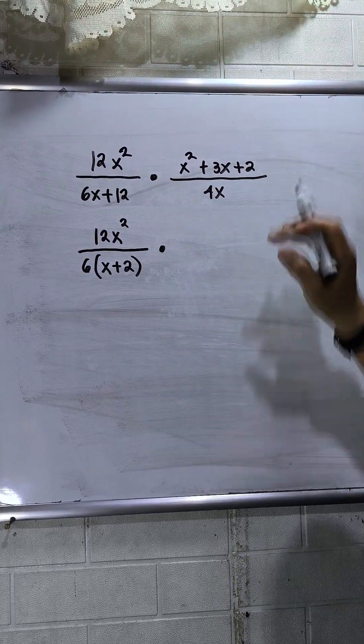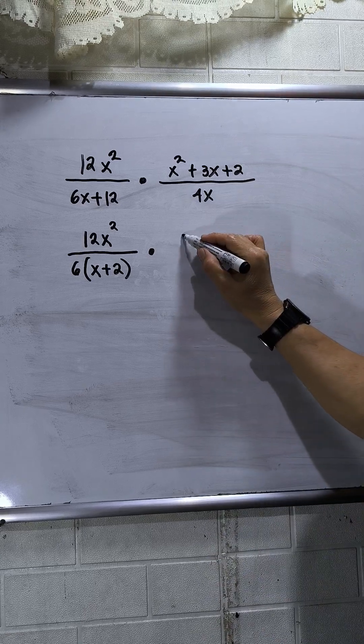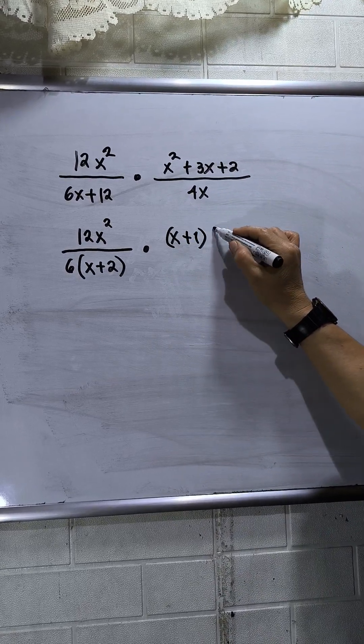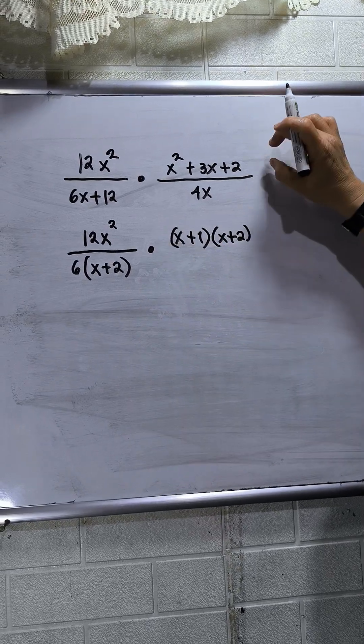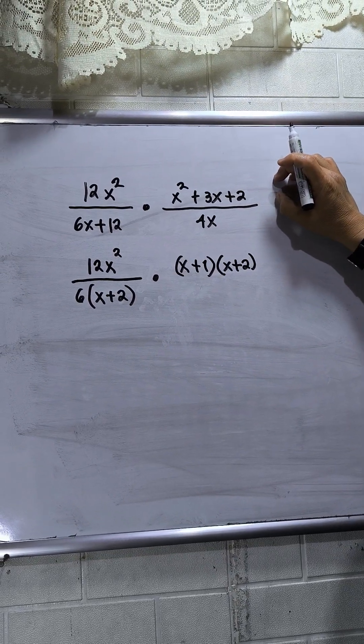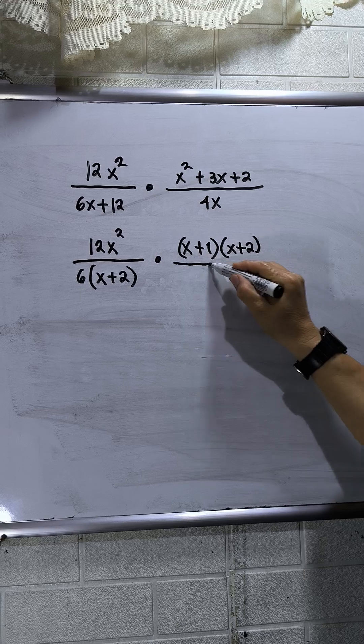Then factor the numerator of the second group, so this will be x plus 1 times x plus 2. If we multiply this one, we will come up with x squared plus 3x plus 2. Then this will be 4x.